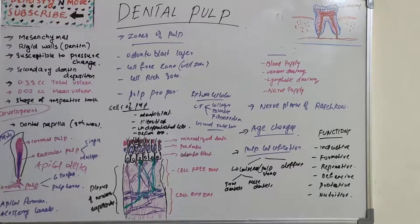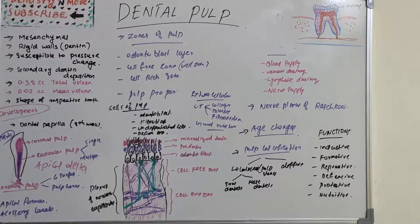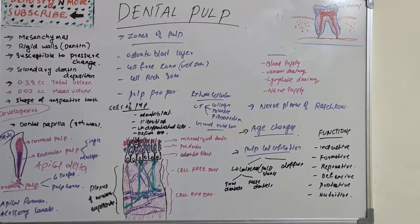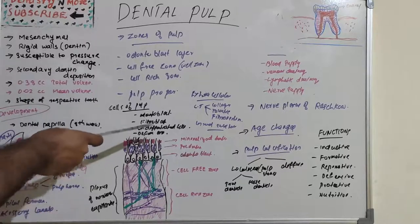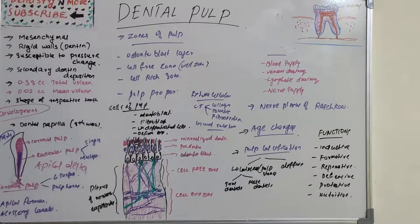Undifferentiated mesenchymal cells can differentiate into odontoblasts, fibroblasts, or macrophages. The defense cells of the pulp include macrophages, mast cells, plasma cells, lymphocytes, neutrophils, and eosinophils — all of which have been studied in pathology regarding their appearance and roles.